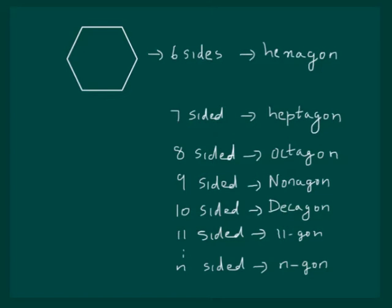And after ten, any number of sides will be, like for example, 11-sided figure will be 11-gon and 12-sided figure will be 12-gon. And N-sided figure will be N-gon.